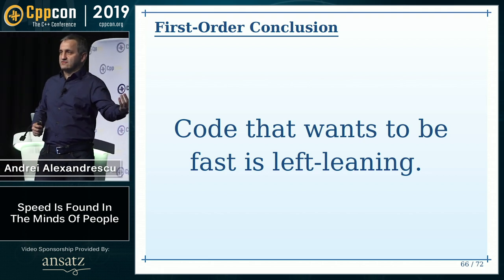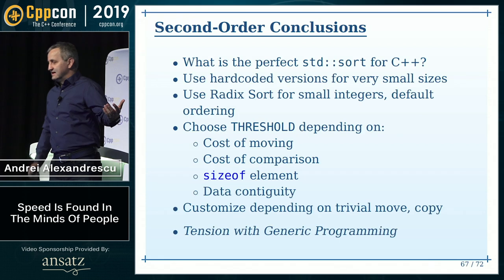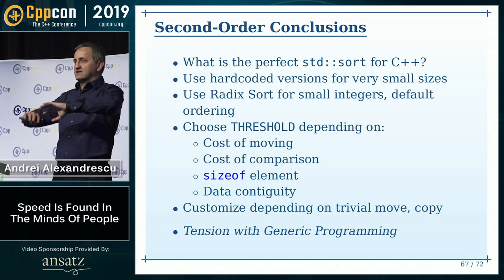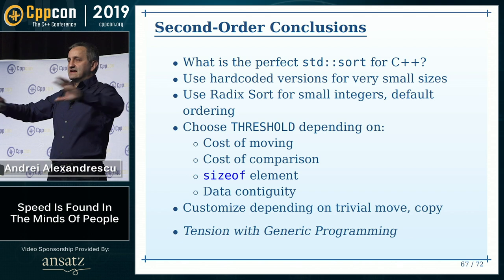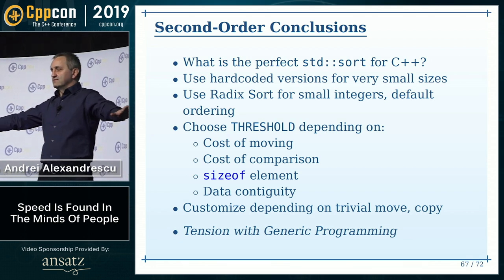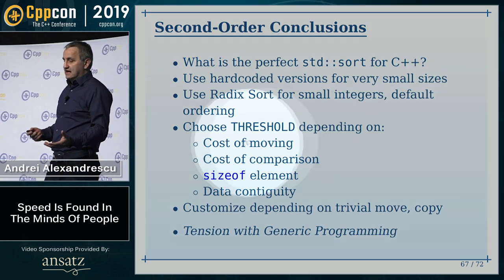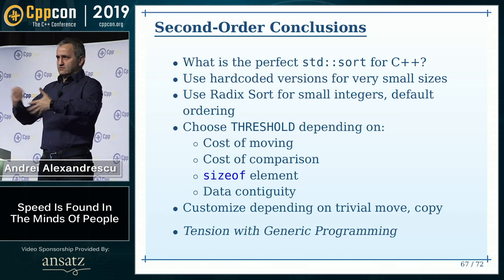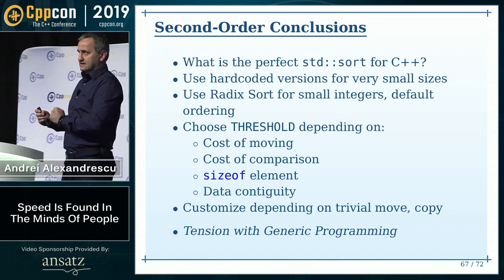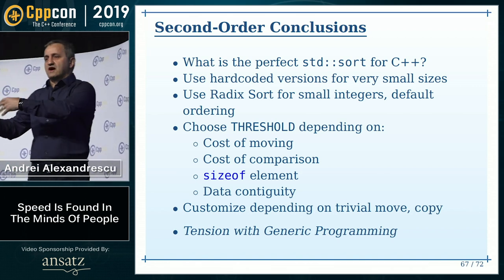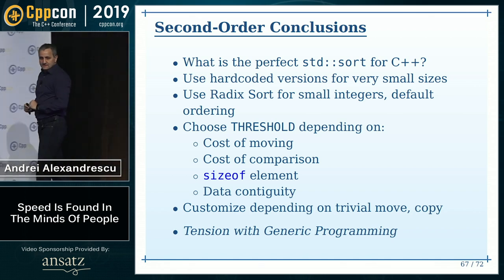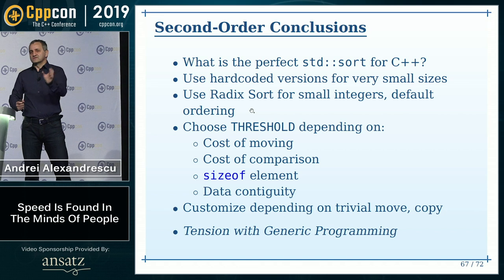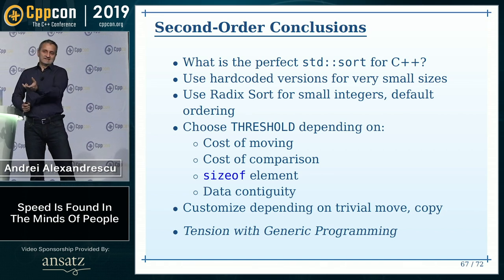There are a few second order conclusions you're not going to like. What is the perfect sort for the C++ programming language? I can only assume we're going to have something like: use hard-coded versions for very small sizes — up to five, just code the routines. Clang and Visual Studio both do some of that. And then maybe for small integers with default ordering, use radix sort, which is very fast but only works with small integers and the default less-than or greater-than ordering.